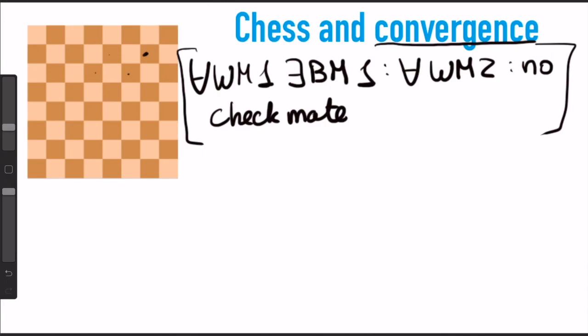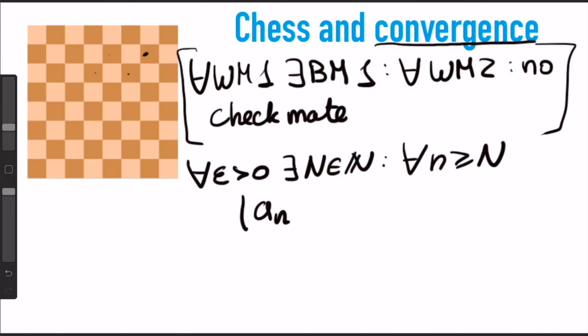Because in that definition, we write that for all epsilon greater than zero, there exists some index N in the natural numbers, such that for all indices after that, our terms in the sequence do not get further than epsilon away from some limit a.